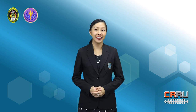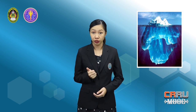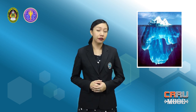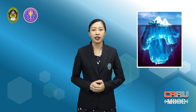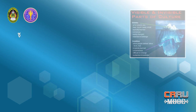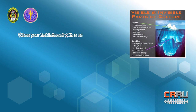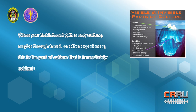Culture is like an iceberg. Culture is often compared to an iceberg, which has both a visible part on the surface and an invisible part below the surface. Let's start with the top 10% of the culture iceberg. When you first interact with a new culture, maybe through travel or other experiences, this is the part of culture that is immediately evident to you.